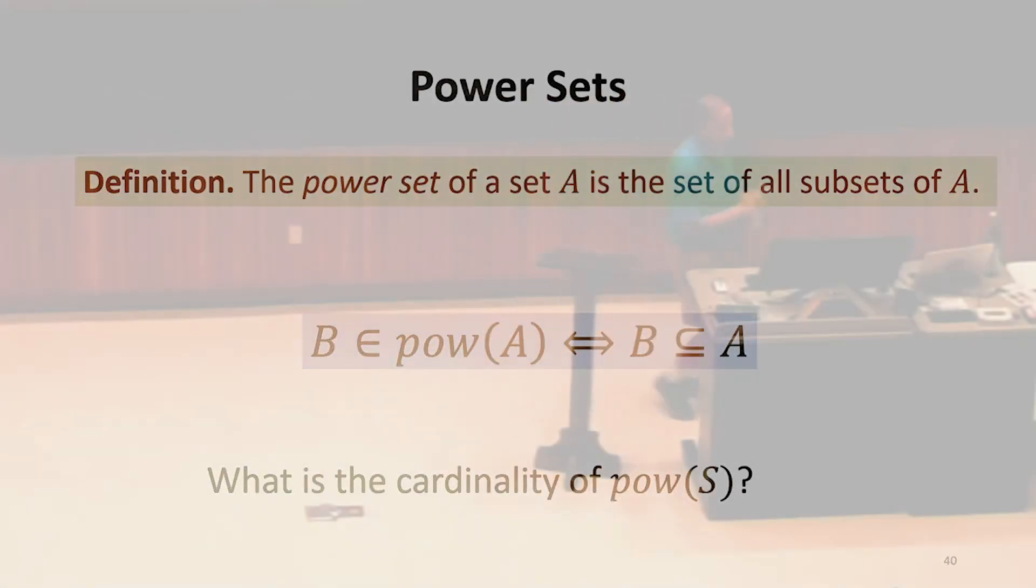If we want the power set of {1, 2, 3}, how many elements will be in its power set? Yeah, eight. Right? So that's where the name power set comes from.